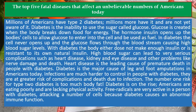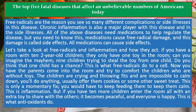The number one risk for type 2 diabetes is too much body fat. Diabetes is on the rise — Americans are eating poorly and lacking physical activity. Free radicals are very active in a person with diabetes, attacking a number of cells because diabetes causes an abnormal immune function. Free radicals are the reason you see so many different complications or side illnesses in this disease. Chronic inflammation is also a major player with this disease and in the side illnesses.